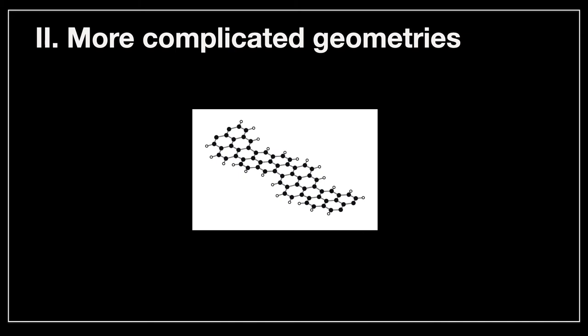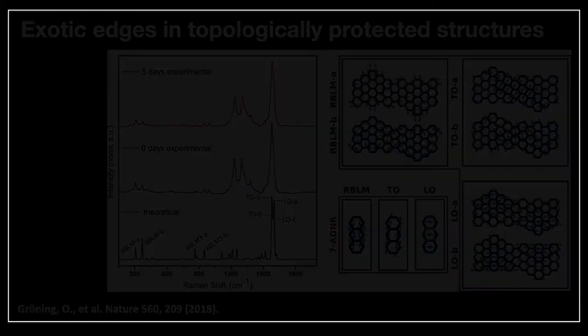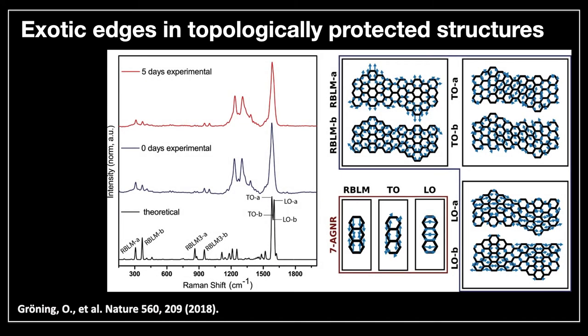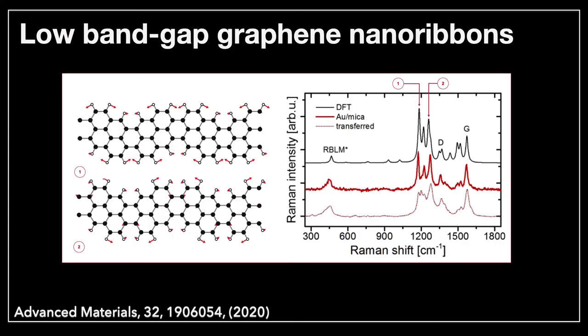We can look at more complicated geometries where radial breathing mode and shear mode make sense. They're not perfectly rectangular structures. We can explain a number of experiments, like this one done with the group of Roman Fasel with Oliver Groening. The DFT calculation here is much more rich with many more peaks because we have many more atoms on the edge, and they fit very well with experiments. We can understand the quality of the material by looking at those fundamental vibrations. There is another structure with a low-band gap graphene, another type of structure, again done with the group of Fasel, where the DFT calculation fits perfectly with the experiment.